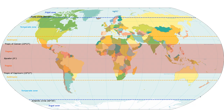In geography, the temperate or tepid climates of Earth occur in the middle latitudes, which span between the tropics and the polar regions of Earth. These zones generally have wider temperature ranges throughout the year and more distinct seasonal changes compared to tropical climates, where such variations are often small. The temperate zones are where the widest seasonal changes occur, with most climates found in it having somewhat balanced influence from both the tropics and the poles.